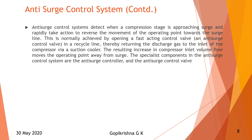Anti-surge control systems detect when a compressor stage is approaching surge and rapidly take action to reverse the movement of the operating point towards the surge line. This is normally achieved by opening a fast-acting control valve in a recycle line, thereby returning the discharge gas to the inlet of the compressor via a suction cooler. The resulting increase in compressor inlet volume flow moves the operating point away from the surge line. That is why there is a cooler — once cooled, the volume is returned to the compressor using the anti-surge control valve back to suction.